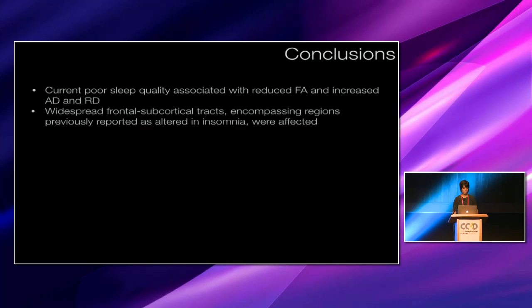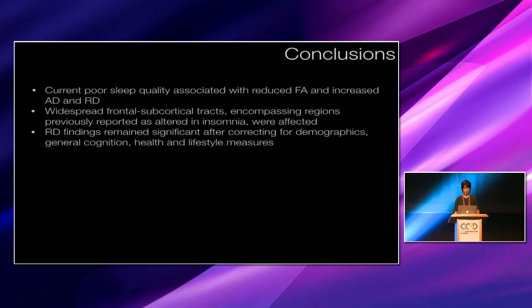So just to conclude, our three main findings were that current poor sleep quality was associated with reduced FA and increased axial and radial diffusivity. Widespread frontal subcortical tracts encompassing regions previously reported as altered in insomnia were affected. And radial diffusivity findings in particular remain significant after correcting for demographics, general cognition, health, and lifestyle measures.